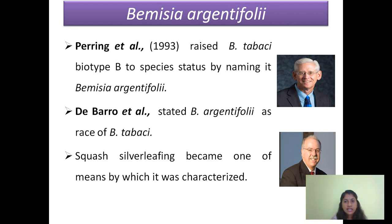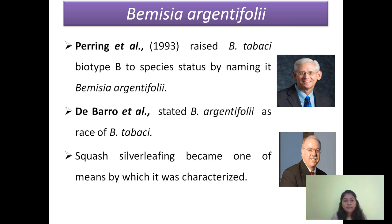Here comes Bemisia argentifolia. There was great confusion about whether Bemisia argentifolia is a separate species or a race of Bemisia tabaci. Perring and co-workers raised biotype B to species status by naming it Bemisia argentifolia. Burrow and co-workers stated it was a race of Bemisia tabaci. This distinction was based on one character: biotype B was able to induce silver leafing in squash. Based on this character, it was stated as the separate species Bemisia argentifolia.